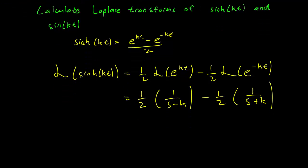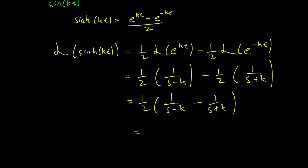And this is just going to be simple algebra. We factor out the one-half. And this will be equivalent to s plus k minus s minus k over s minus k times s plus k.